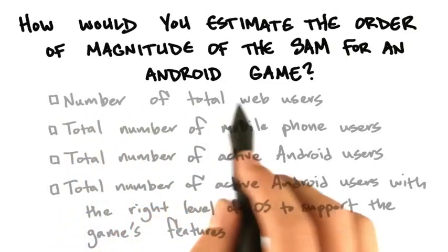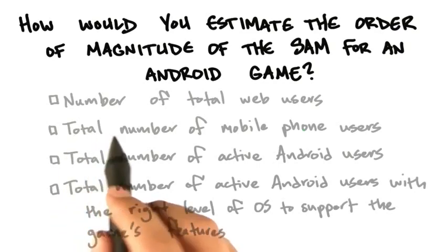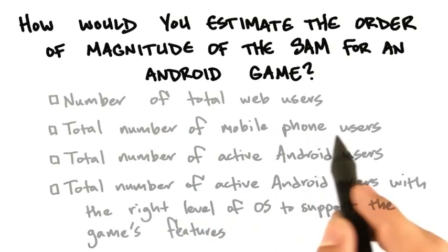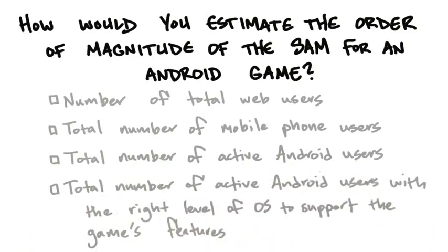Would it be the total number of web users? Well, for an Android game, they're not on the web. They might hear about it on the web, but that's not really going to help you understand the served available market. Is it the total number of mobile phone users? Well, that might be the total available market, but you're really interested in just the Android piece. And so number three might make sense: the total number of active Android users.